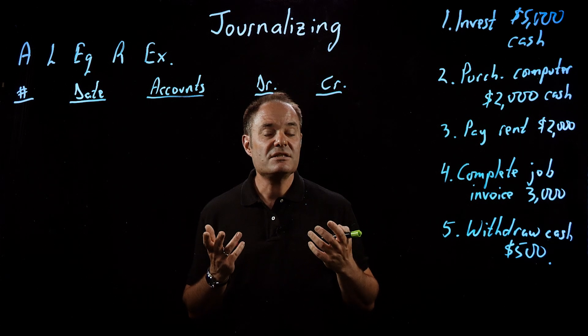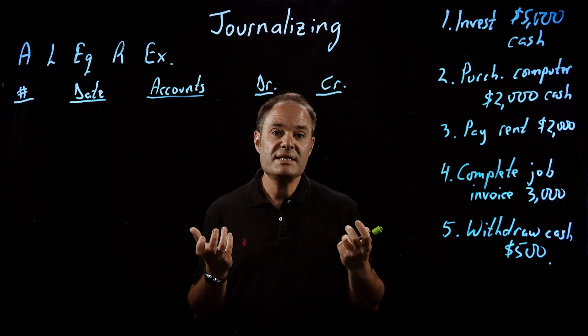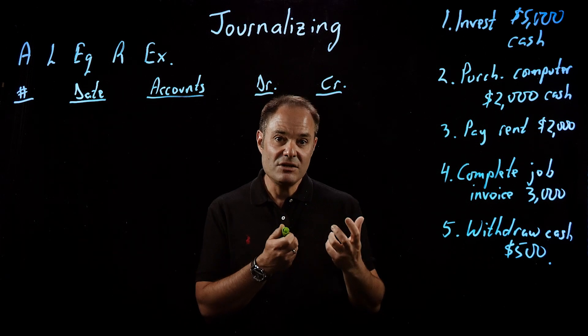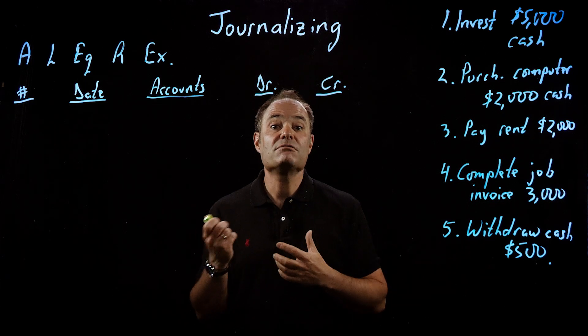The first thing that a company has to do is decide, do we have a transaction? Once they've decided if they have a transaction and they've analyzed the transaction, the next step is to record it in the journal.